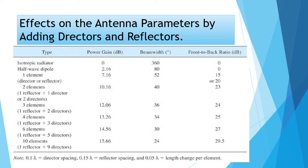Next, we have a half-wave dipole — one element. This has no parasitic elements, so the power gain is increased to 2.16 decibels. The beam width is narrower, at only 80 degrees. The front-to-back ratio is zero, because the radiation pattern of a half-wave dipole looks like a figure-8 from above, so the radiation in the front is equal to the radiation in the back.